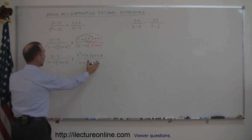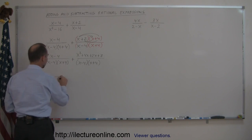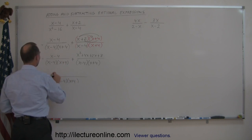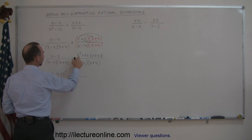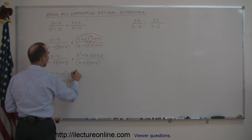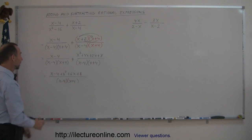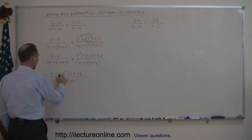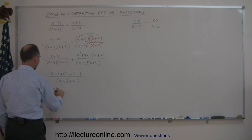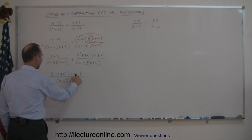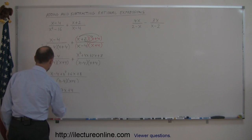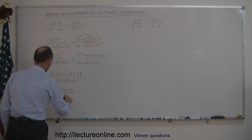Now that we have the same denominators, we can write these two fractions over a single denominator of (x − 4)(x + 4), and add everything in the numerator. We have x minus 4, plus x squared, plus 4x plus 2x — that's plus 6x — and then plus 8. Combining like terms: x squared, then 6x plus x gives plus 7x, and negative 4 plus 8 gives plus 4, all divided by (x − 4)(x + 4).